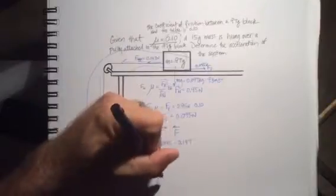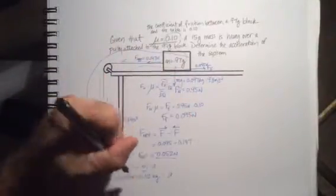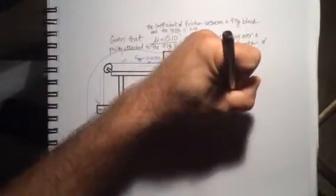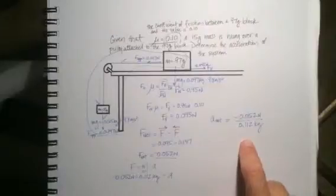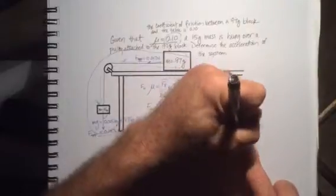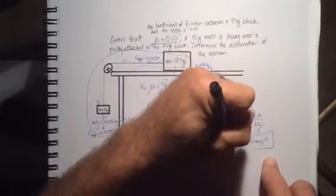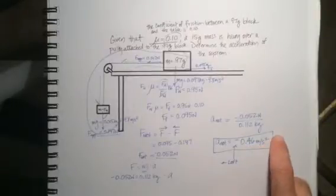Our total mass is 112 grams or 0.112 kilograms times A, and our net force was 0.052 newtons. Solving for A, we take 0.052 divided by 0.112 kilograms, which gives us a value of negative 0.46 meters per second squared. The negative sign simply means it's pointing to the left, so the system is accelerating at 46 centimeters per second squared to the left.